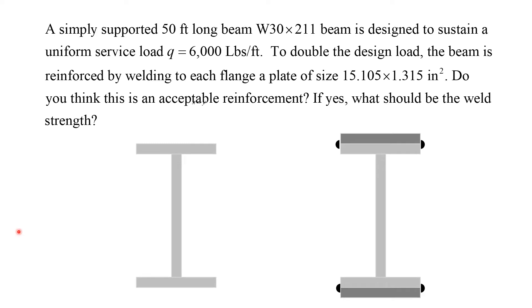To this end, we consider an I-beam. The original cross-section is a wide flange W30 by 211. It's a 50-feet long beam, which is supposed to carry the load of 6,000 pounds per foot.